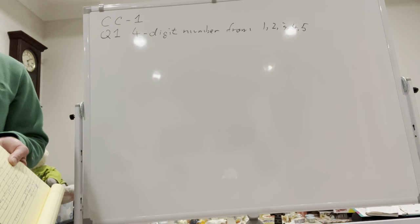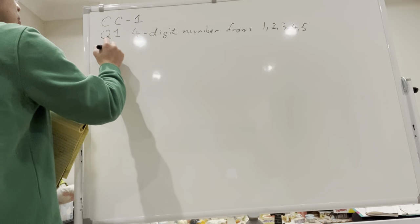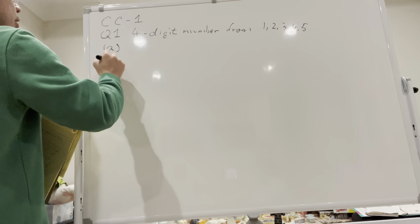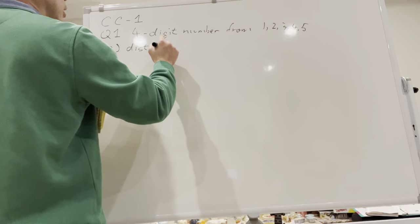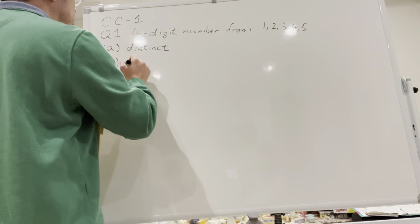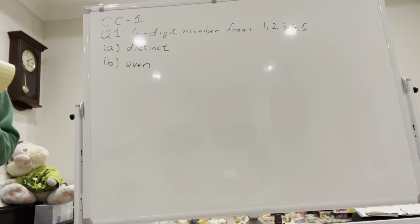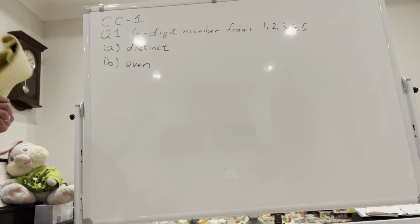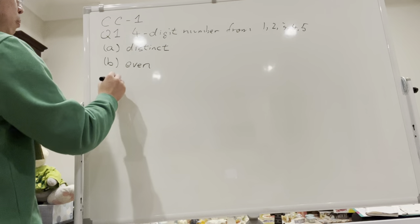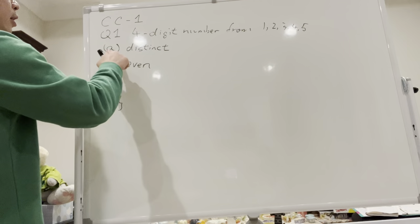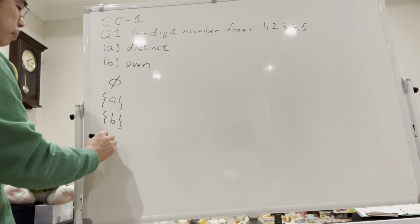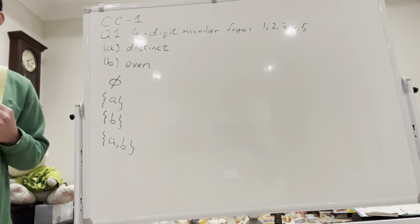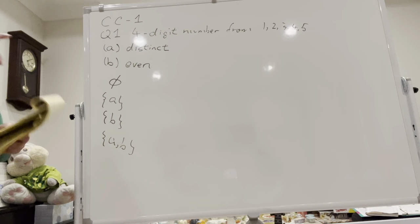The question uses a humorous way to describe itself. It says there are two additional conditions. The first requires the four digits to be distinct. The other requires the number to be even. And if you read the end of the question, there are actually four parts: requiring neither condition, requiring only distinct, requiring only even, and requiring both.